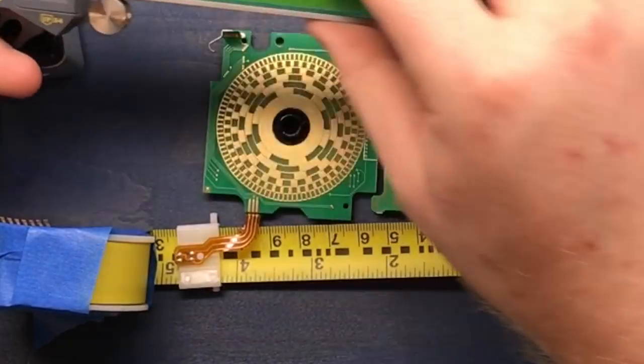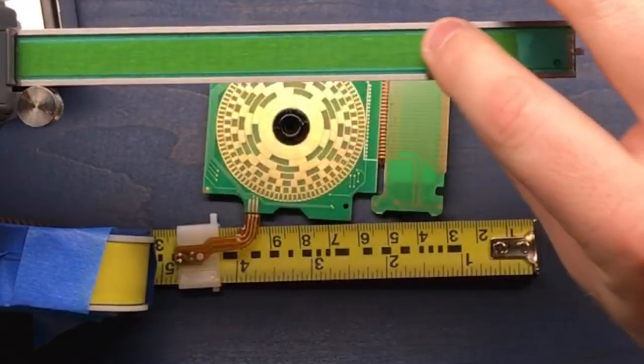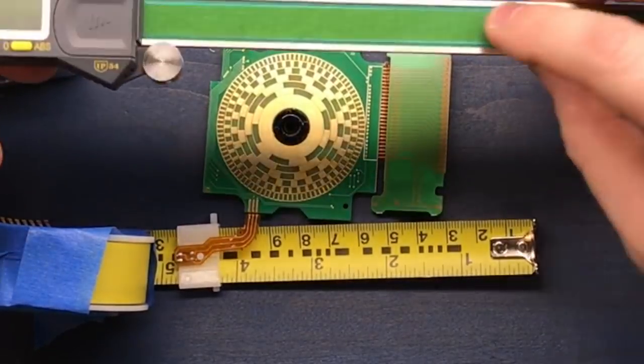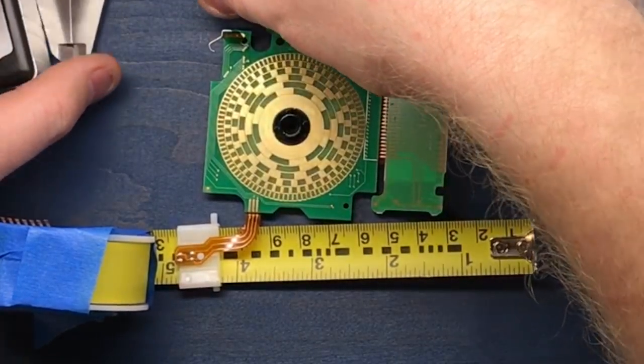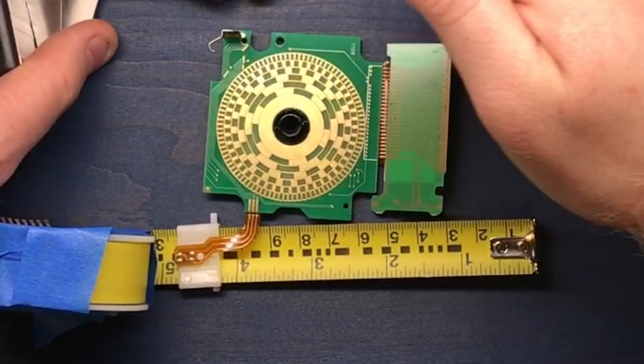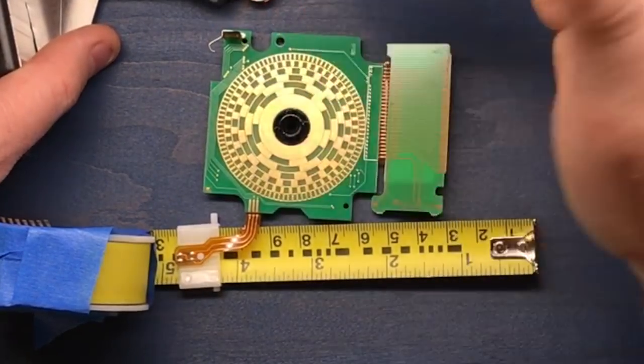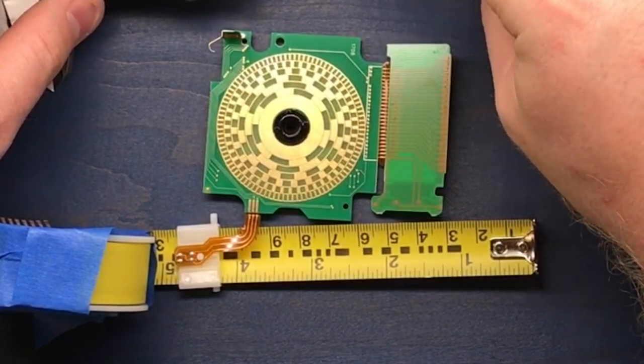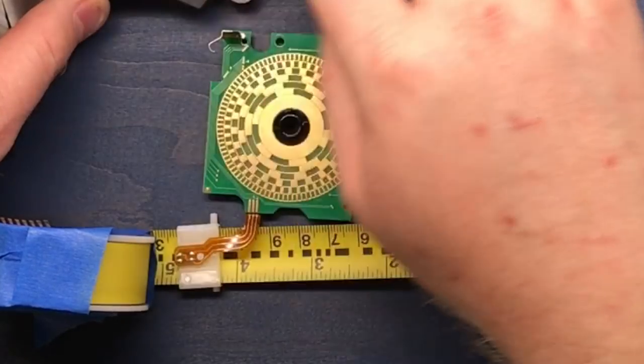And also the digital caliper has the capacitive encoder. And the downside of those is if any grease or dirt or moisture or anything is in there, it's going to affect the reading because it all goes off the capacitance.